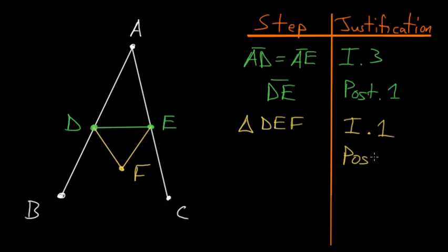And then again, we'll use Postulate number 1 to connect the points A and F. So we just created line AF. And from here, we want to notice two separate triangles, the triangle DAF and the triangle EAF.